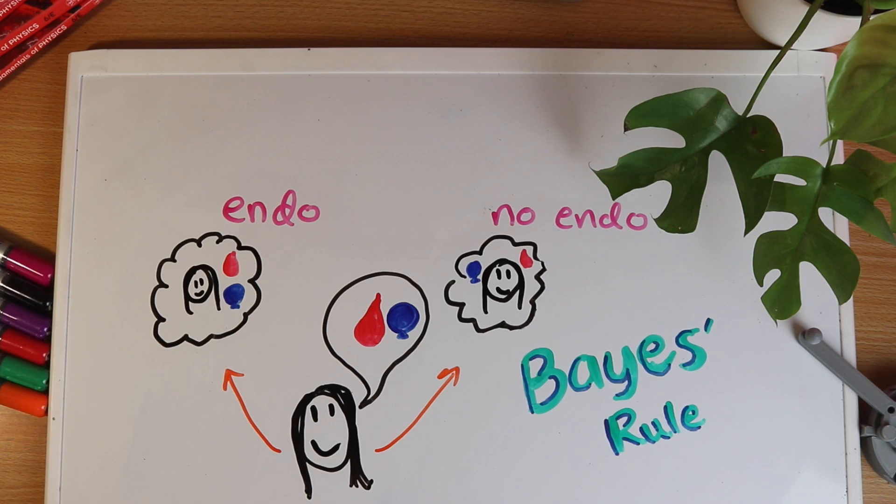This is called Bayes rule. In particular this is Bayes rule in the ratio form which in my opinion is way more useful than the usual way it's written down.